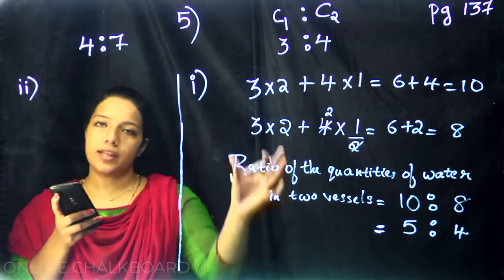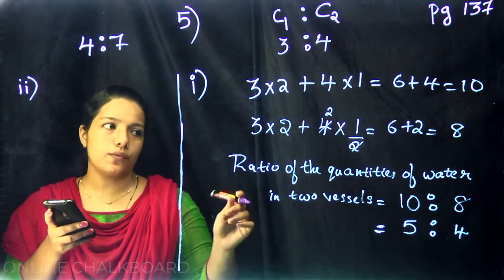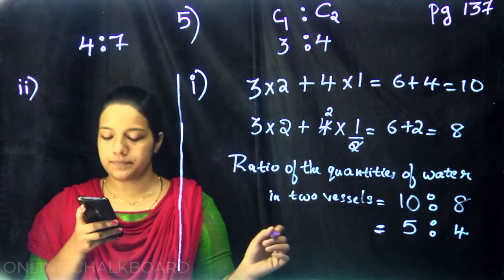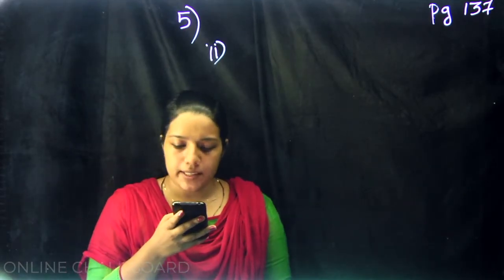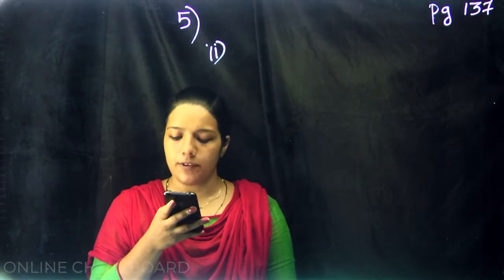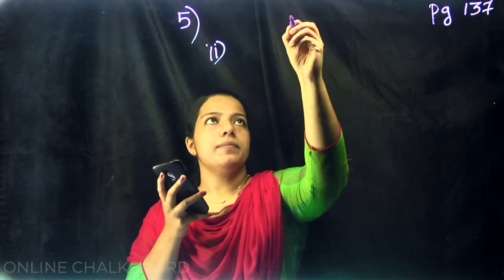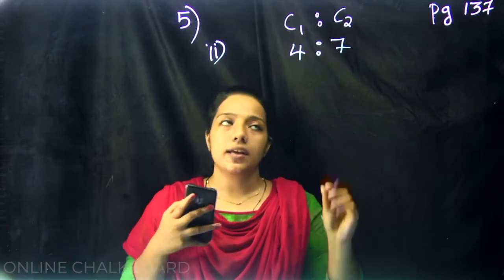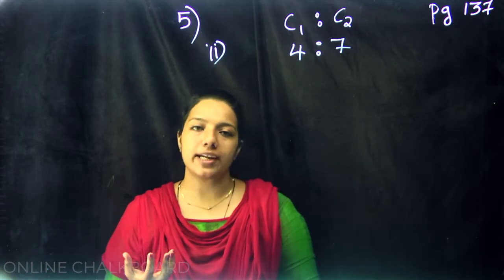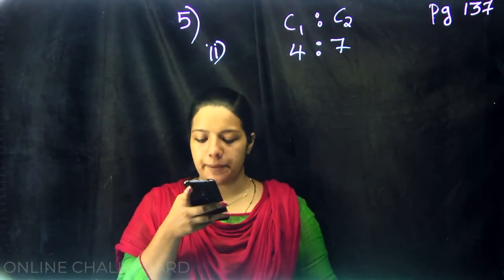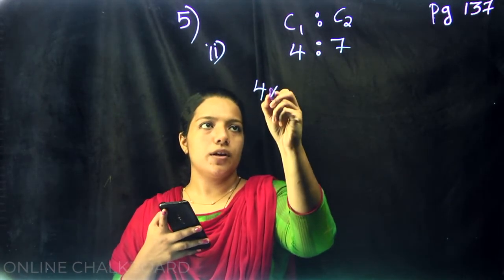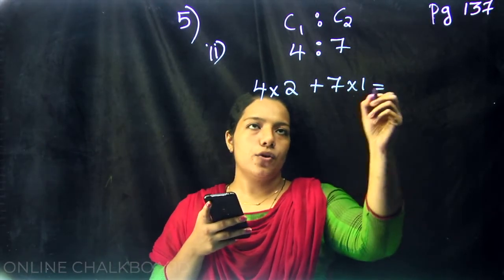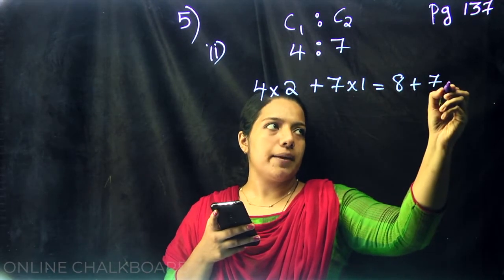In the second section, the capacity ratio C1 is to C2 is 4 is to 7. For the first vessel: the smaller bottle is filled twice — 4 into 2 is 8 — and the larger is filled once — 7 into 1 is 7 — giving 8 plus 7 equals 15. For the second vessel: the smaller bottle is filled twice — 4 into 2 is 8 — and the larger is halved — 7 into 1 by 2 equals 7 by 2. So 8 plus 7 by 2.